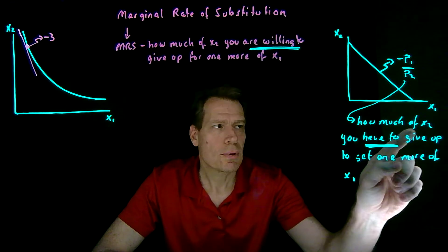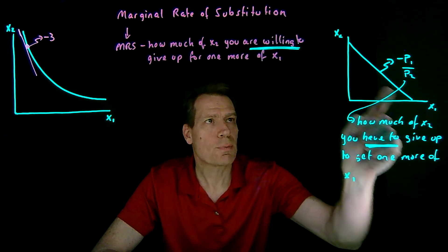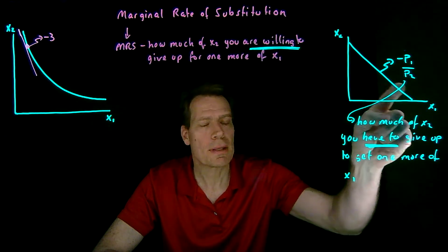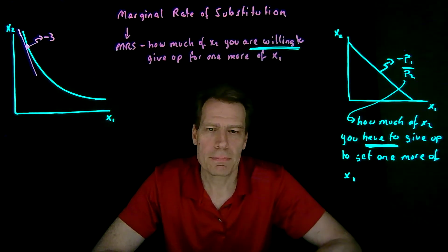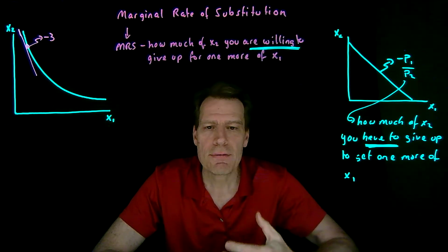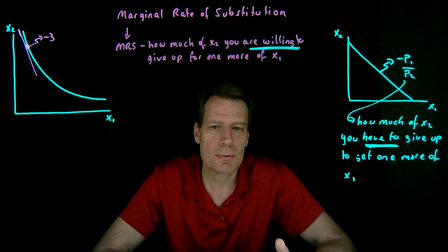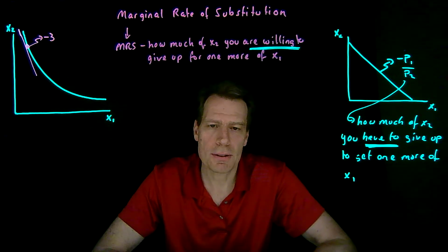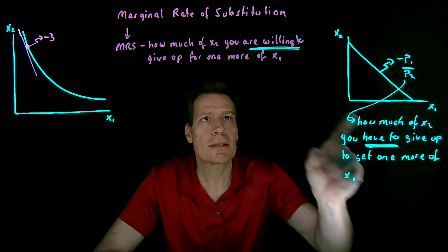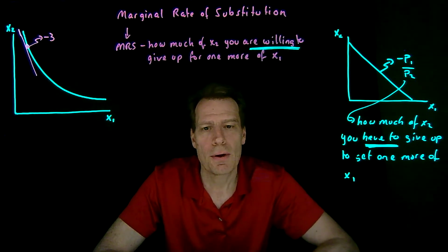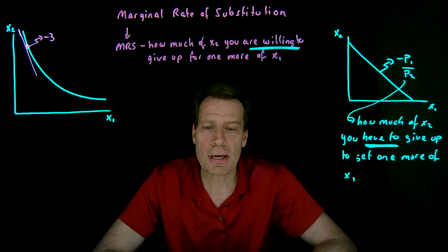With the MRS, it's how much of x2 you're willing to give up. What you have to give up to get 1 more of x1 has everything to do with what prices Walmart is charging you for x1 and x2 — it's determined solely by the prices we're facing in the store. What we're willing to give up has everything to do with our tastes and preferences; it has nothing to do with prices. So these are different concepts: the opportunity cost of x1 versus the marginal rate of substitution.